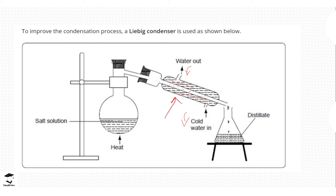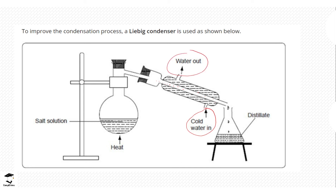We use a counteractive flow — going against gravity. That is why the water enters from the bottom and exits from the top, so it moves in the opposite direction and travels slower, allowing condensation to happen efficiently. Make sure you remember: water in at the bottom, water out at the top.